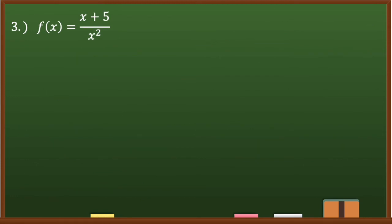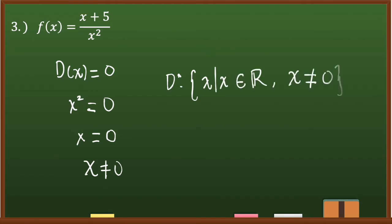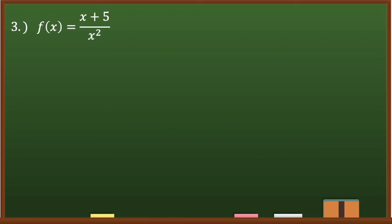Number three: f(x) = (x + 5) / x². To find the domain, set the denominator to zero: x² = 0, so x = 0. Since x cannot equal 0, the domain is the set of all x such that x ≠ 0.